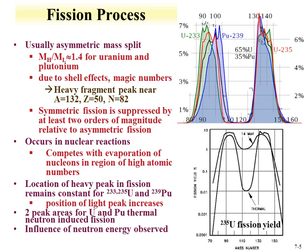We can also see the influence of neutron energy. For uranium-235 fission yield, the difference between thermal neutrons and 14 MeV neutrons is significant. As we increase the energy, the yield in the middle section rises — we are washing out some of the shell effects with higher energy neutrons.